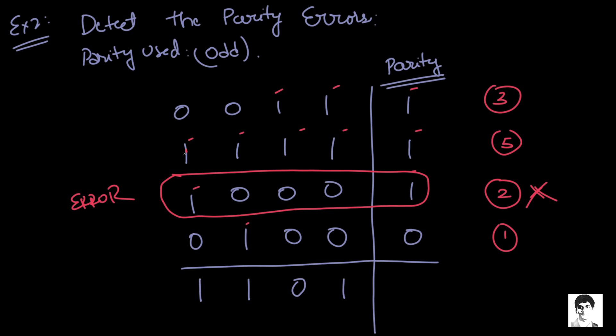Coming to columns, we have three ones, which is good. And then we have three ones, which is good again. Now we have two ones, which is bad, error. And then again, we have three ones, which is good. And this is how we determine the error when we have built our parity block, depending upon whether it is odd or even.